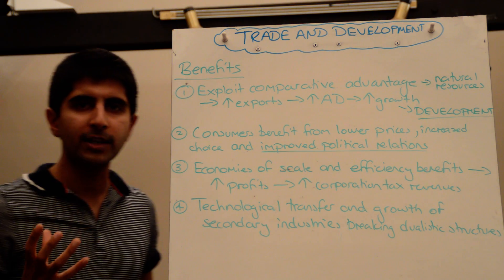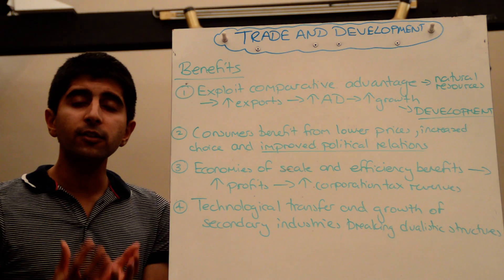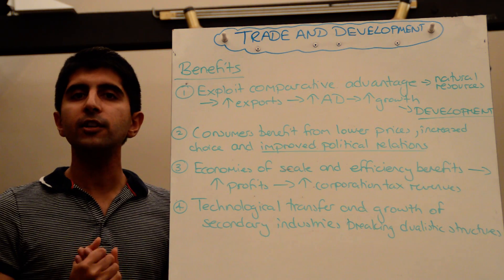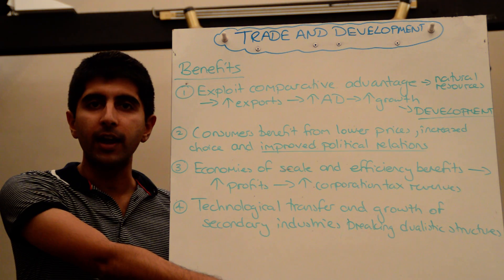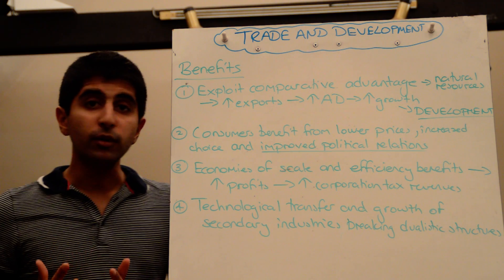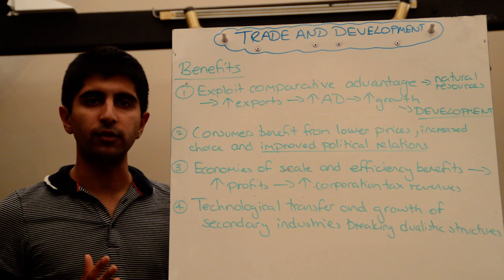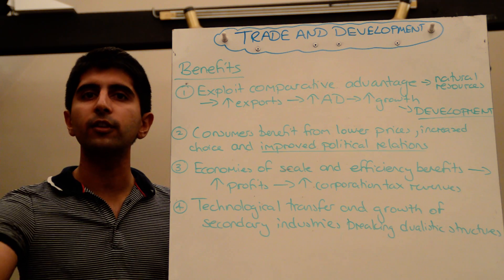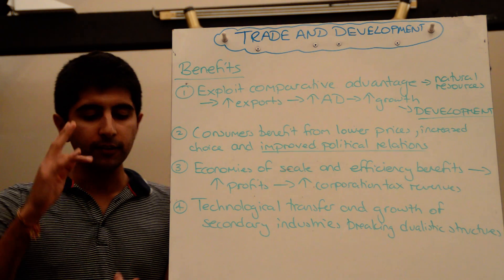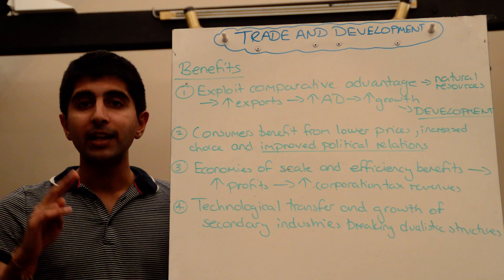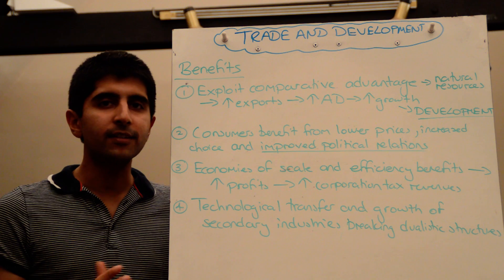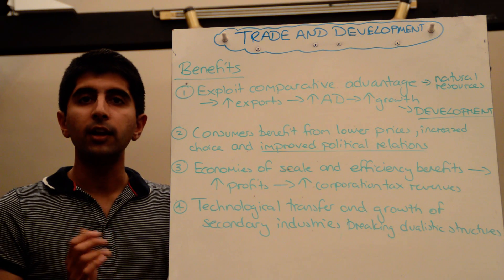Let's start with point number one, a fundamental idea about why trade is good — countries can exploit their own comparative advantages. Wherever they have an opportunity cost advantage in producing, they specialise in that area and export the goods they're able to create or extract. In the case of developing countries, a lot of them are resource rich and have an abundance of natural resources which they can extract and sell to countries who demand them. In the last five to ten years, natural resources have been in very high demand, with emerging economies growing very quickly needing such resources to support their growth.